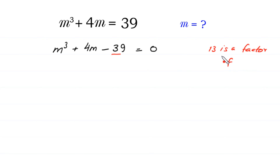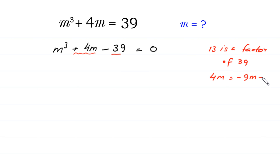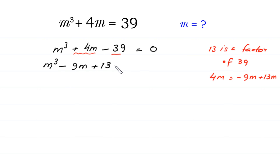Since 13 is a factor of 39, we split the plus 4m term as minus 9m plus 13m.